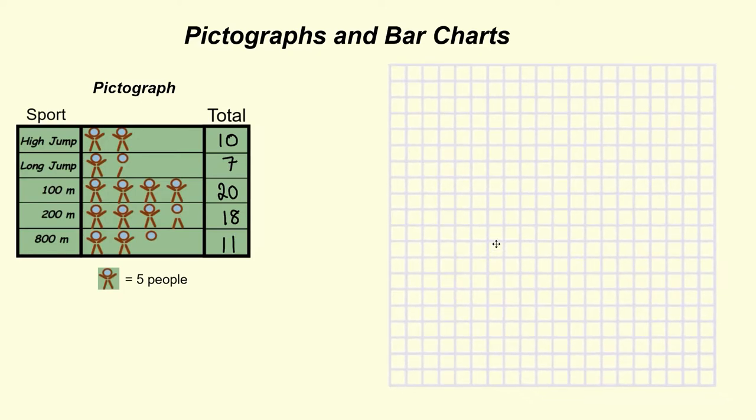First thing we need for our grid is two sets of axes. One going across the way and one going up and down. The one going across is called the x-axis and the one going up vertically is the y-axis. These lines want to have little arrows at the end to show that they keep going in either direction.